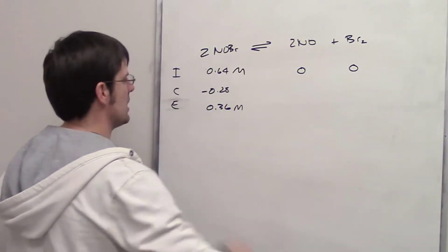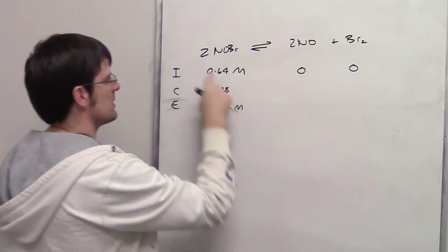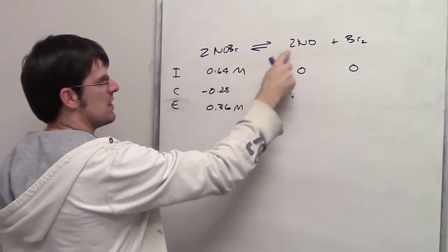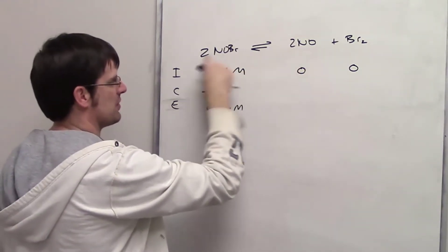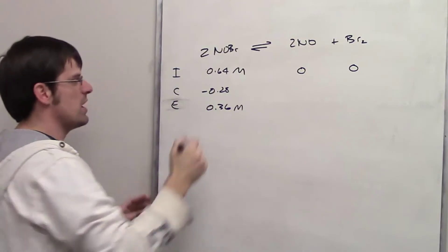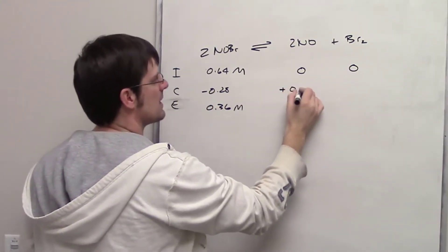Now I'll use the stoichiometry of this reaction to fill in these blanks. Notice that NOBr and NO both have a coefficient of 2, so the change in concentration is the same for both. The difference is NO is on the product side, so it's plus 0.28.